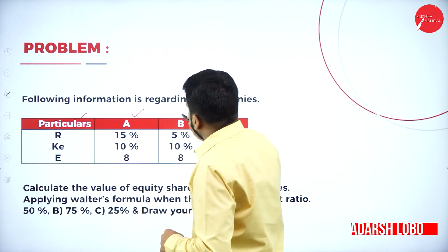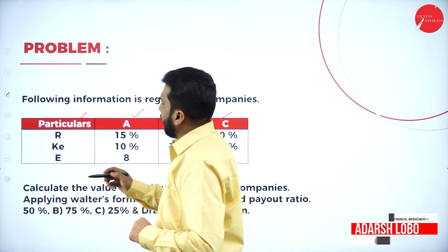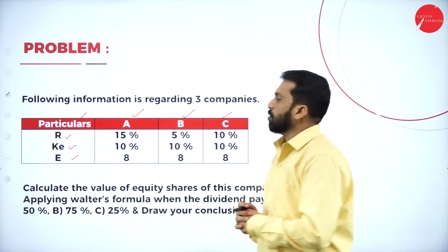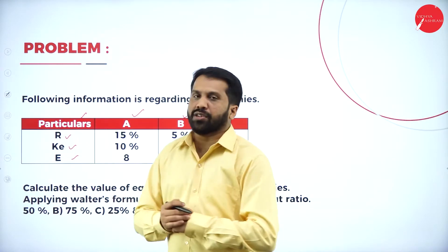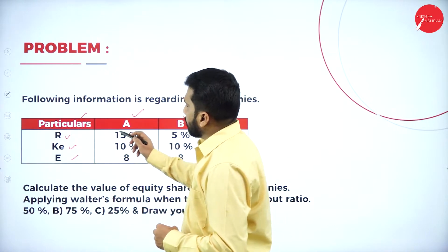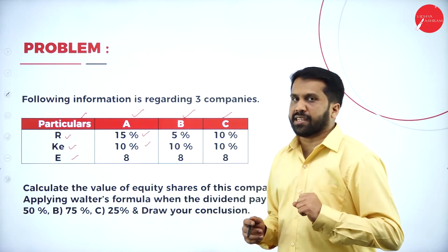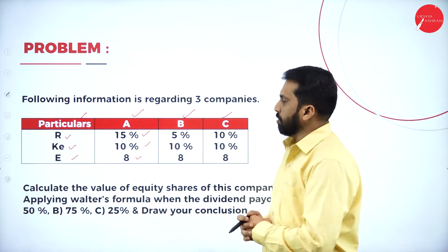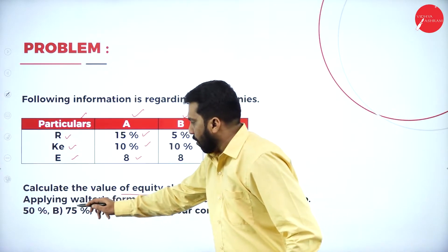We have companies A, B, and C. As per this, there is a rate of return, cost of equity, and the last one is earning per share. For company A: return is 15%, cost of equity is 10%, and earning per share is 8 rupees. B and C are also given.